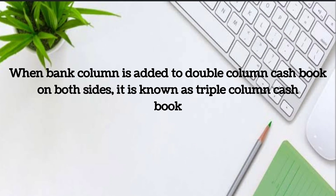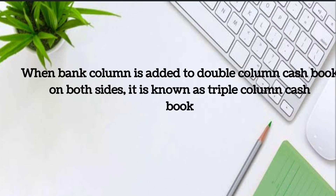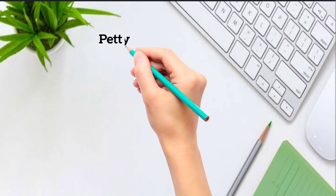Here we should note one thing: cash book always shows a debit balance. Cash in hand is a part of current assets. Since cash account is a real account, we will follow the rule — debit what comes in and credit what goes out.